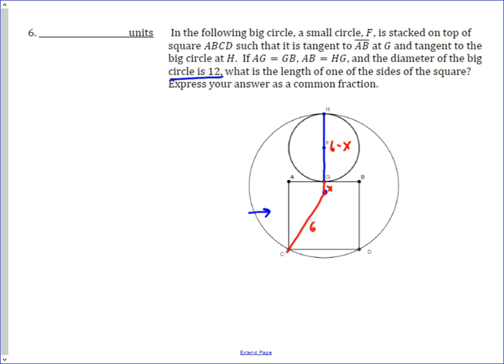Because from the center of the circle, which we're going to call K here, from K to H is just a radius, and the radius is 6, and so the diameter of that circle is 6 minus x, which then means that this length is 6 minus x.